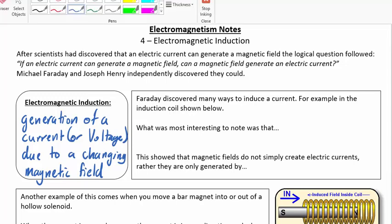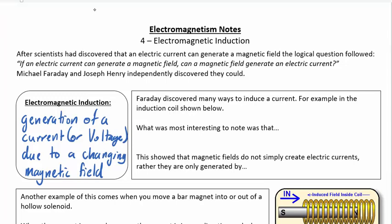And so what Faraday discovered was that there's lots of ways you can induce a current. For example, we can talk about the induction coil and things like that that we've seen in class. What was most interesting to note was that you can move the coil or you can move the magnet around this induction coil. It didn't matter which way you moved it.